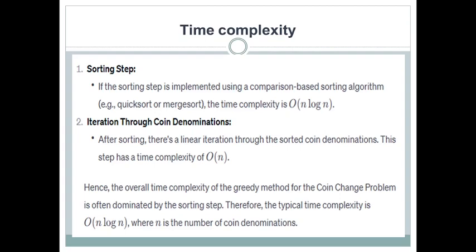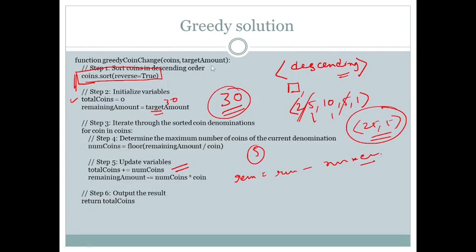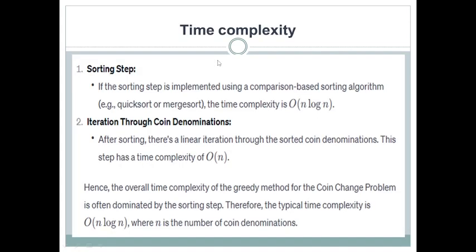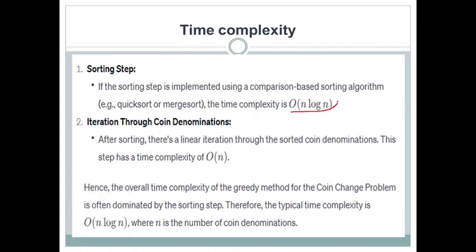The time complexity of this algorithm is straightforward. You can use any type of sorting algorithm, but it is wise to use quick sort because quick sort takes O(n log n) time, so sorting can be done in O(n log n). After sorting, iteration through the coin denominations takes O(n) time — that means n time. So the total time complexity is O(n log n).